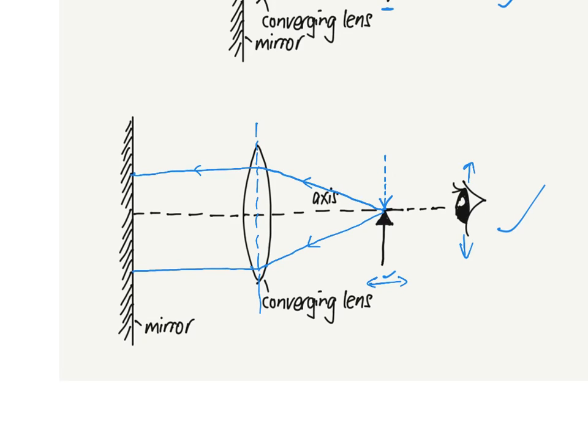When it hits the mirror, it will obey the law of reflection and be reflected back. Then it goes back here and forms the image. That's why the image is at this position.